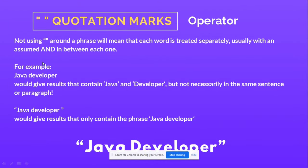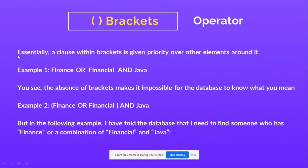Quotation marks are used when you want to treat two words as a single exact phrase. For example, without quotation marks, 'java developer' is treated as two separate words. But with quotation marks, 'java developer' will return resumes that contain that exact phrase. If you want to search for an exact phrase, always use quotation marks.